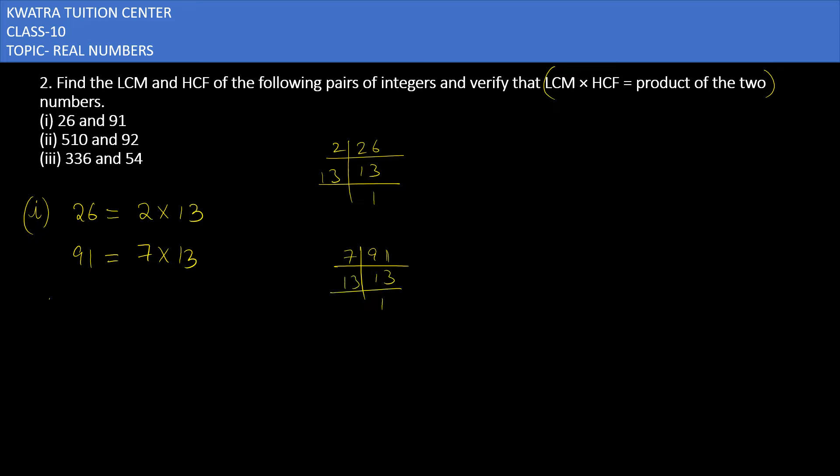Now what you have to do is find the LCM and HCF. LCM is the least common multiple, and HCF is the highest common factor.